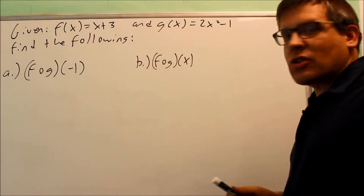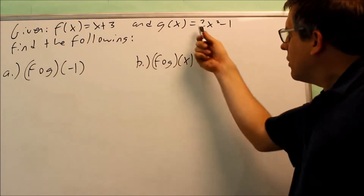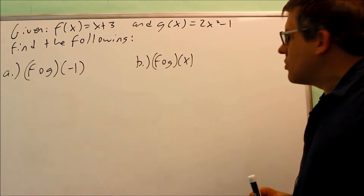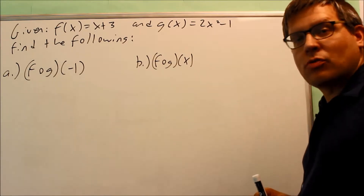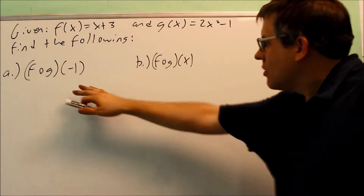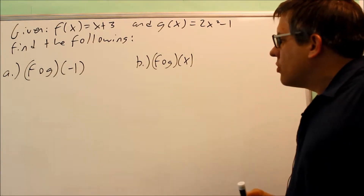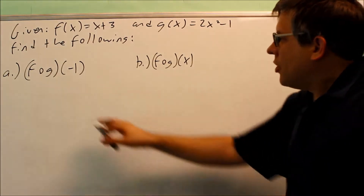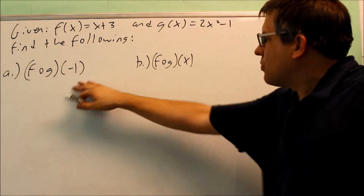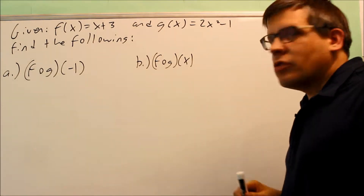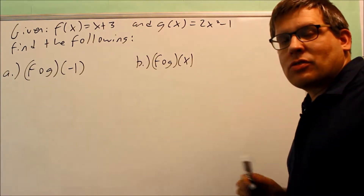This time we have f of x is x plus 3, g of x is 2x squared minus 1. Here are the two parts we're doing. Notice that both these parts have to do with f of x.